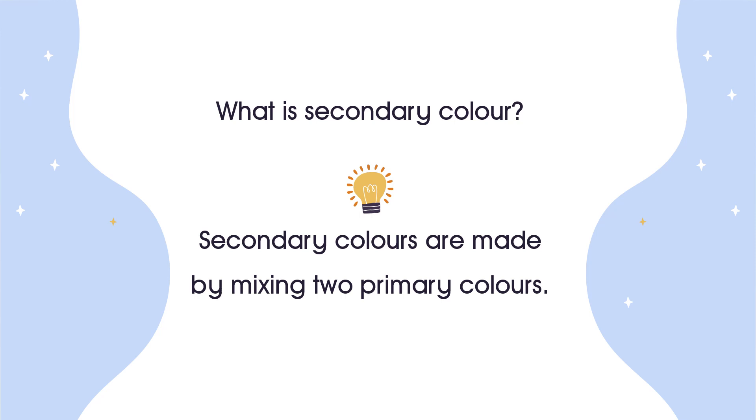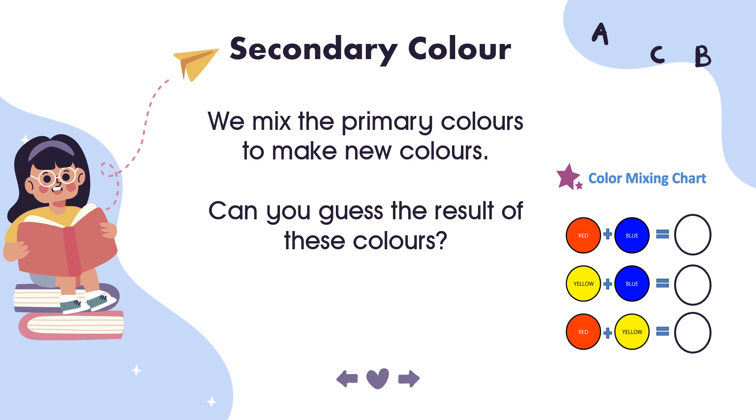What about secondary color? What is secondary color? Do you know what is secondary color? Secondary colors are made by mixing two primary colors. We mix the primary colors to make new colors.